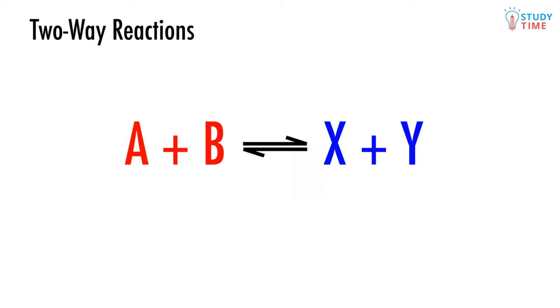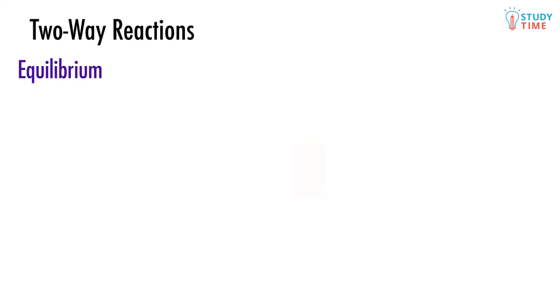So why don't you usually see this kind of thing? Well, to explain that, we need to introduce you to the idea of an equilibrium. Basically, a two-way reaction will be in equilibrium when the forward reaction is happening at the same rate as the reverse reaction. The overall effect of an equilibrium is that the reactions exactly cancel each other out, so we can't see anything.